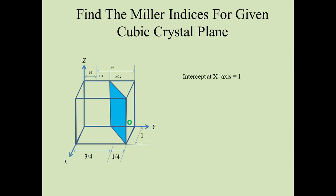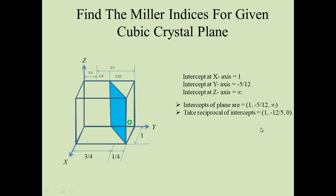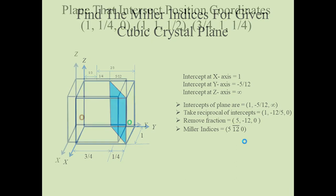Intercept along the x-axis is 1, intercept along the y-axis is −5/12, and intercept along the z-axis is at infinity. So the intercepts of the plane are 1, −5/12, and infinity. Taking the reciprocal of the intercepts we get 1, −12/5, and 0. Removing the fraction, the Miller indices will be equal to (5, 12̄, 0), where the bar represents the negative sign.